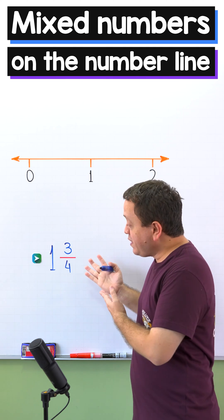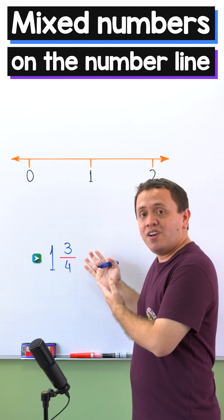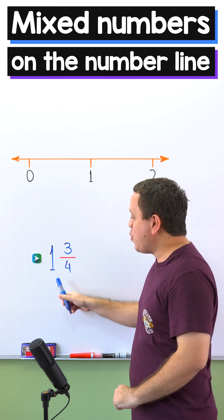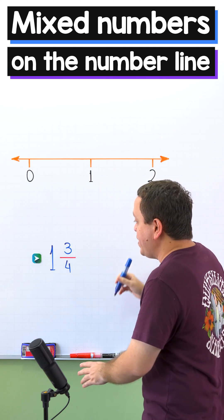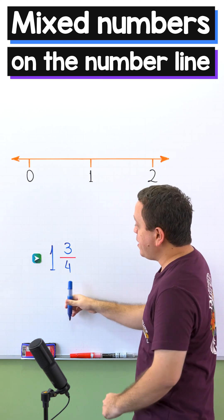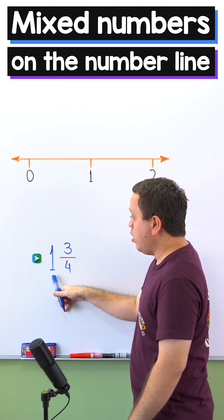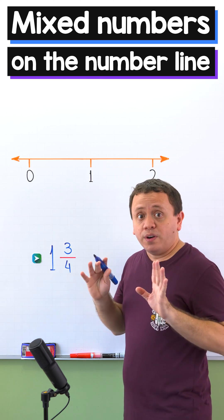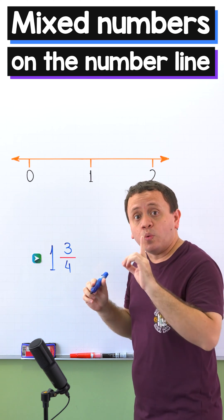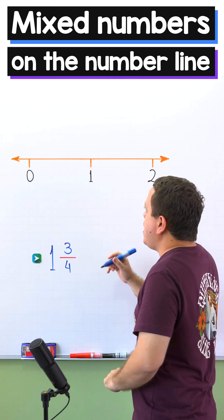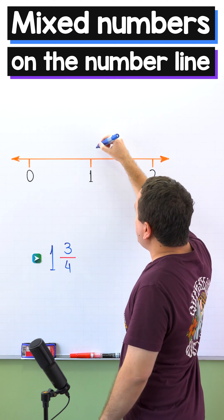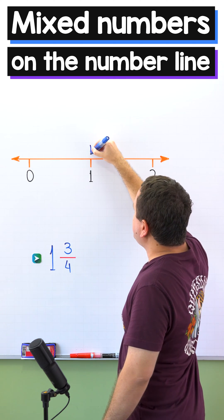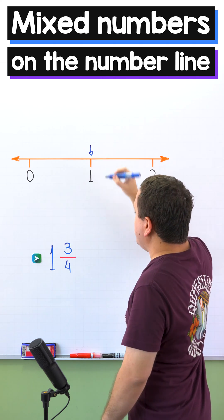In our first example we're going to locate the mixed number one and three-fourths on the number line. As you can see, this mixed number contains one whole. So first we need to locate one on the number line. Here we have zero, here we have one.